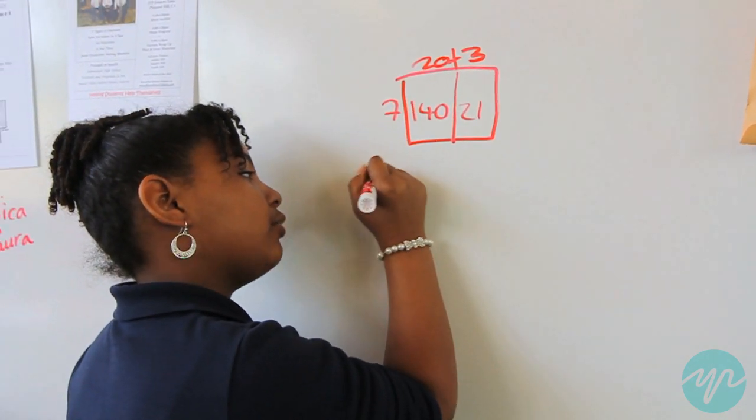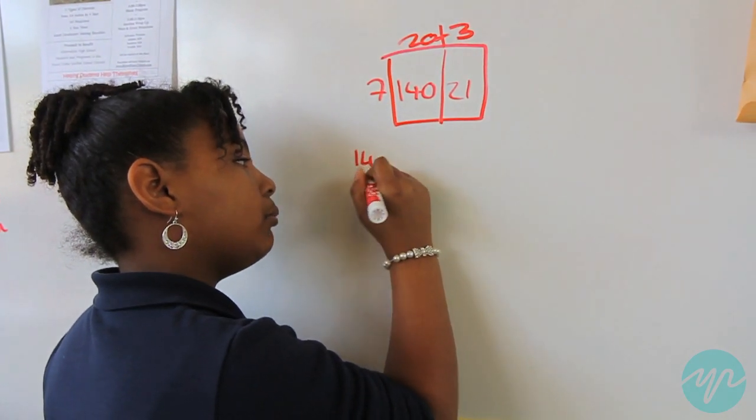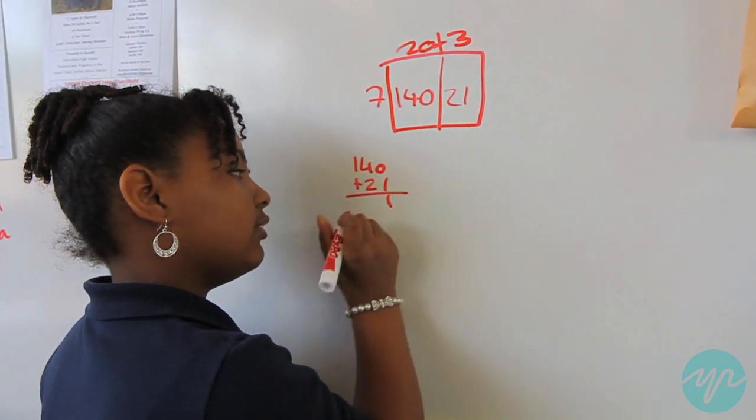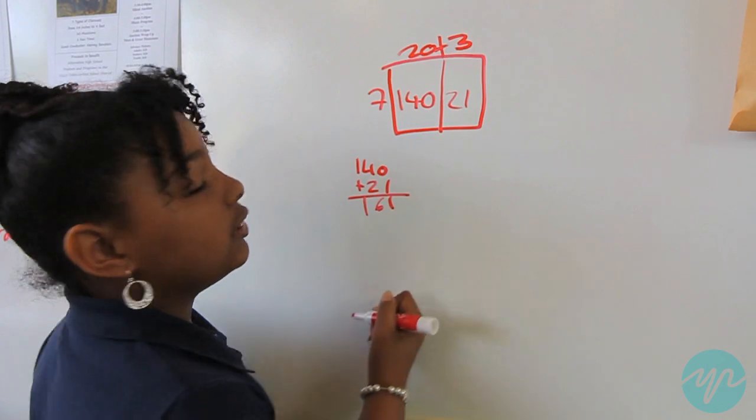And then you can just add 140 plus 21, and that equals 161.